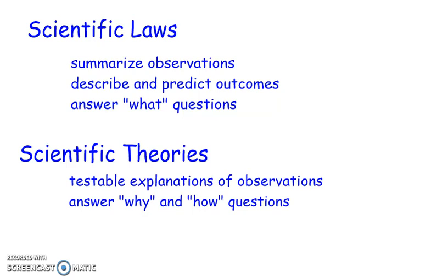A scientific law is something that summarizes our observations. It helps us to describe and predict what outcomes will be for an experiment, and answers questions that ask what.